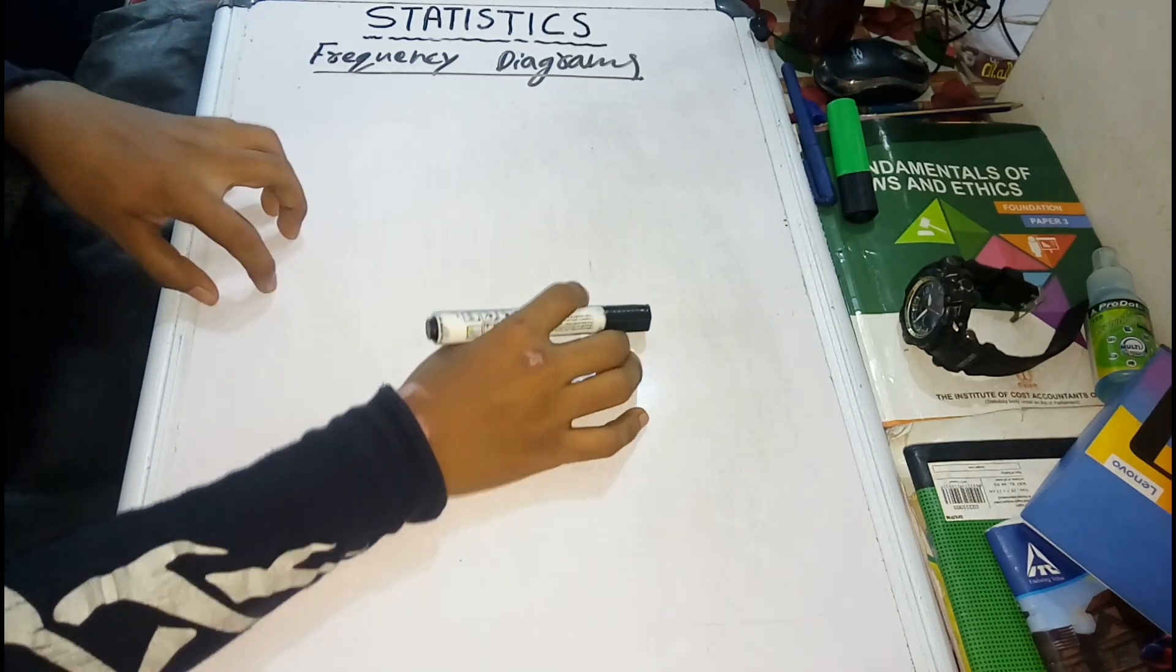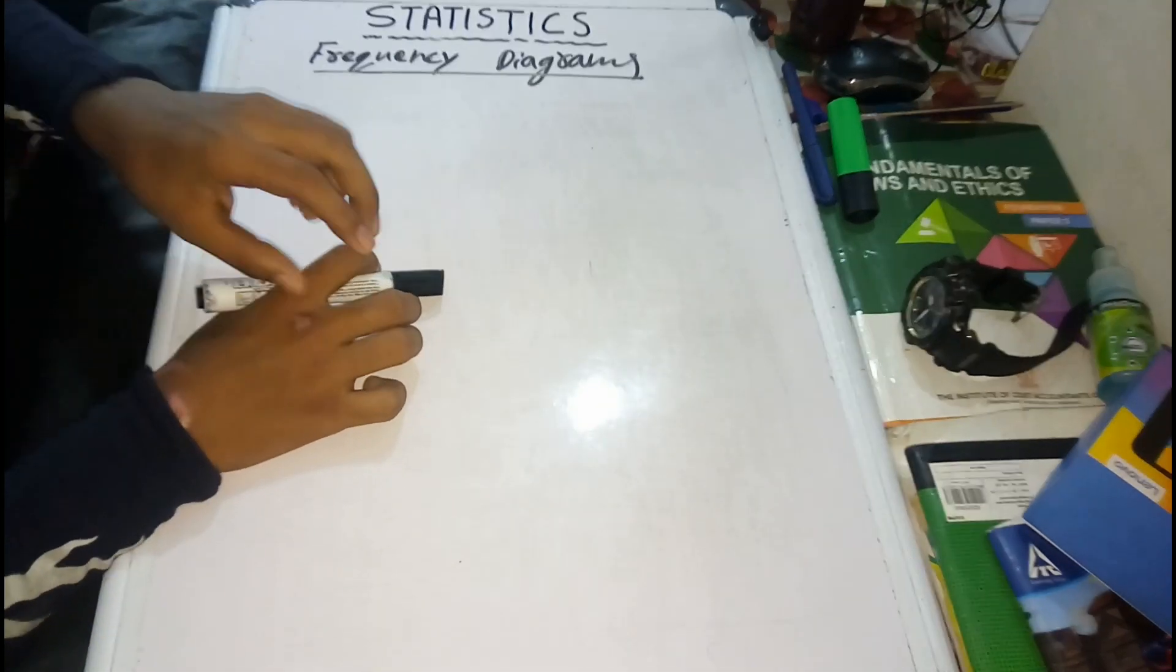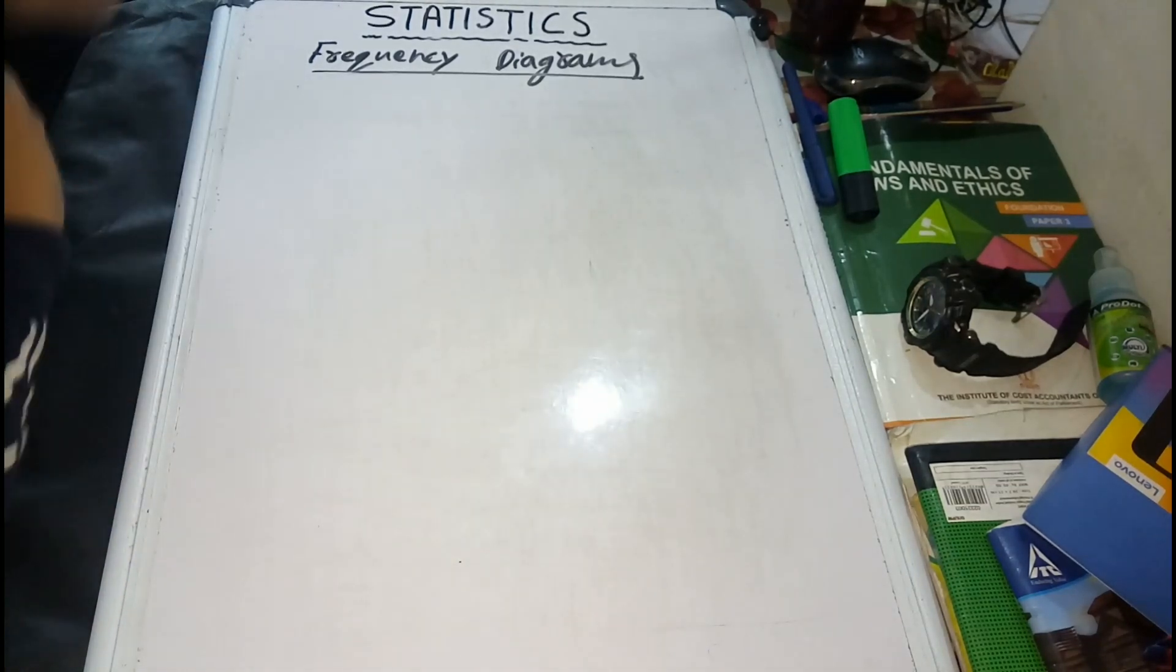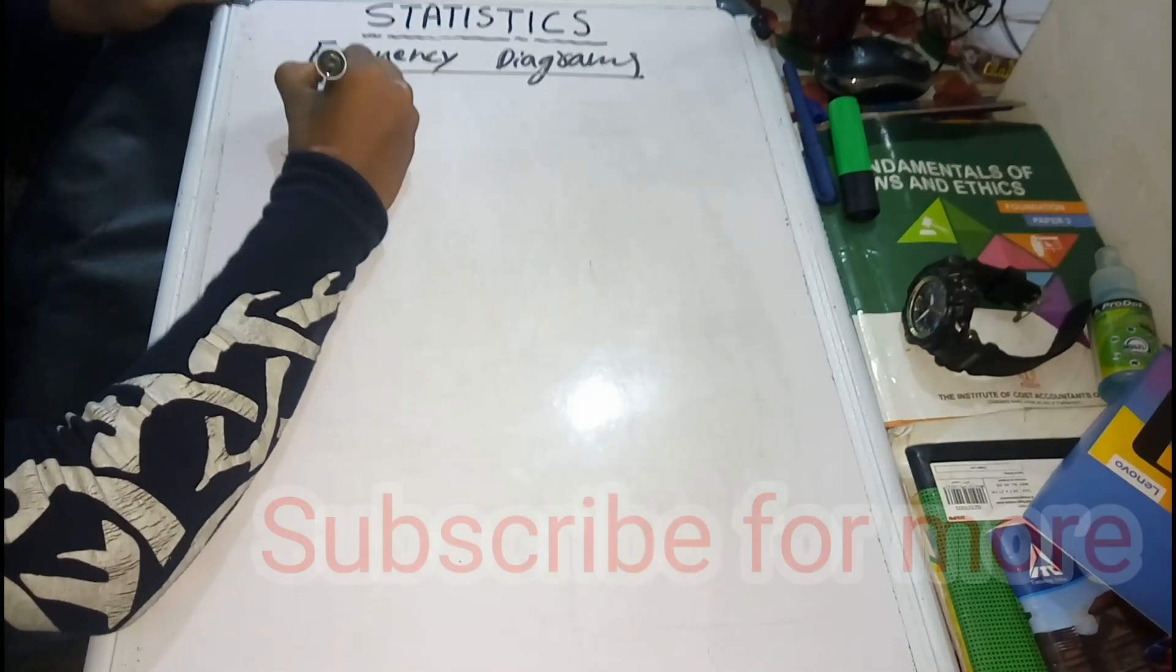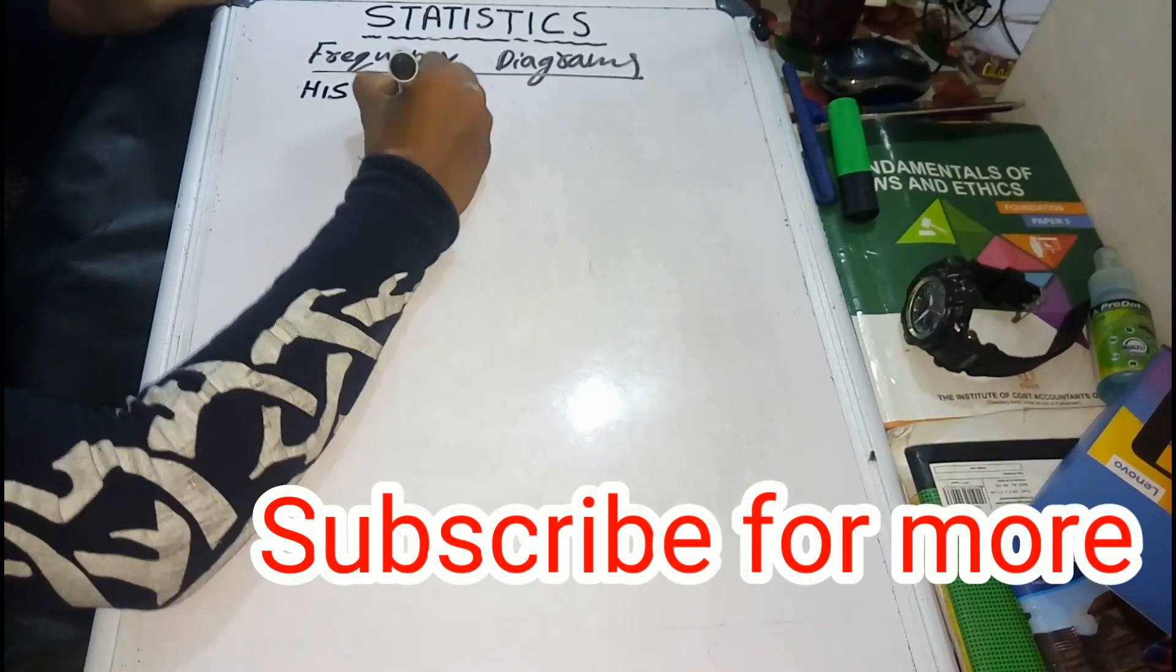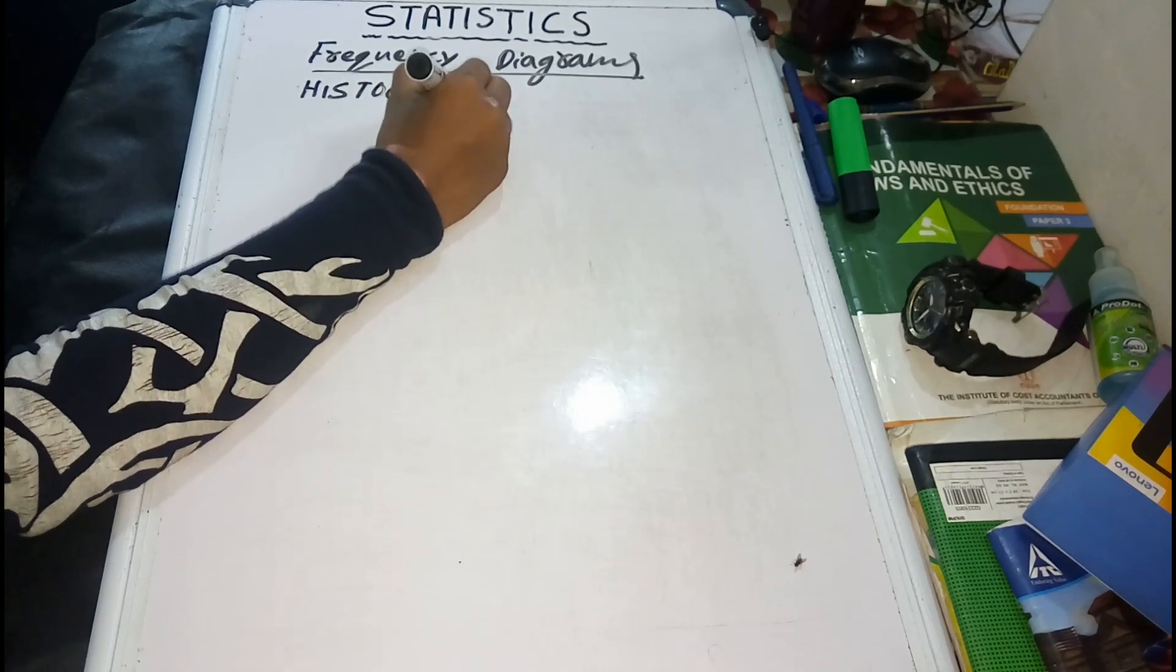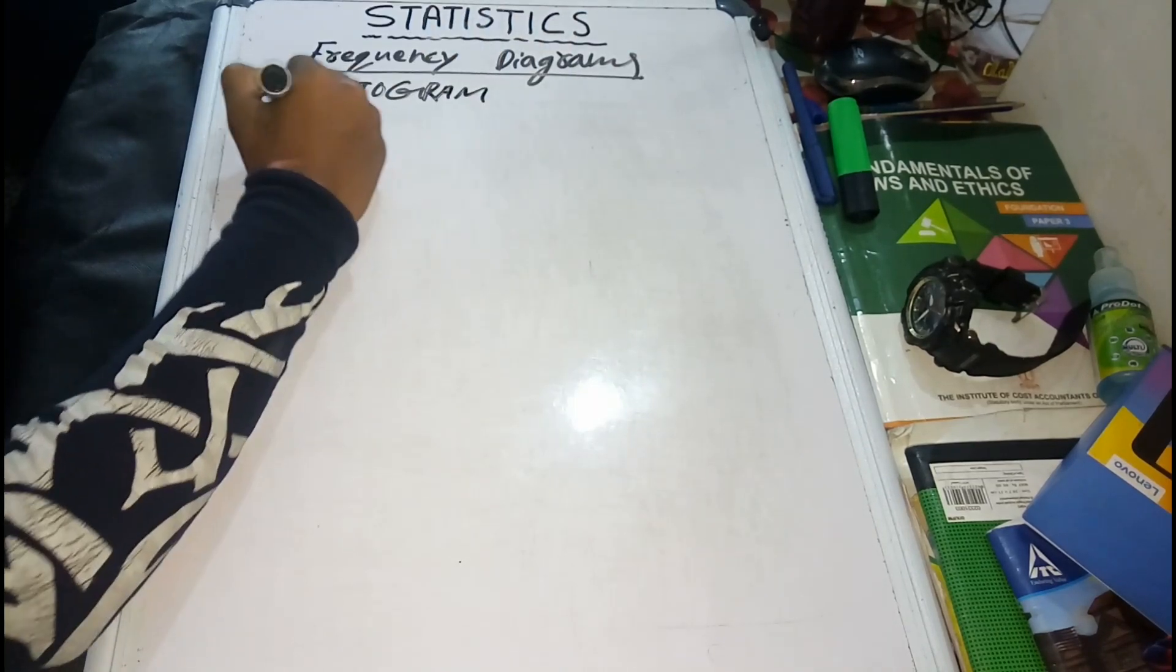Frequency diagrams, classifications are histogram, frequency curve, frequency polygon, and give. So, we are called histogram.